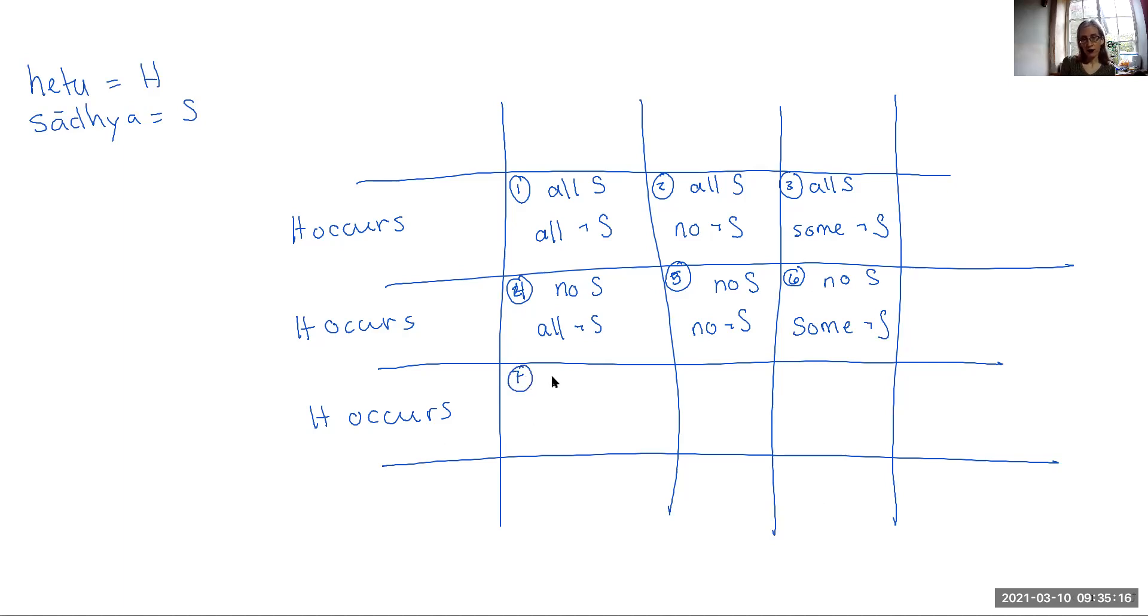Finally, we have it that H occurs in some of the S and in all of the not S. You probably can see the pattern of how we are filling in these cells. Number eight is going to be where the H occurs in some of the S and none of the non-S. And our last cell is where the H occurs in some things that have the Sadia and in some things that don't have the Sadia. So this is the wheel of reasons. These are all of the different types of reasons you could have.